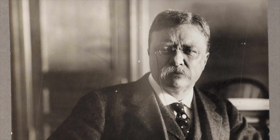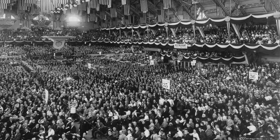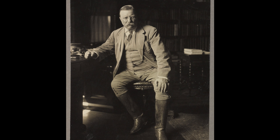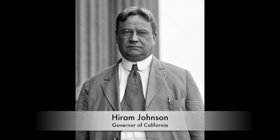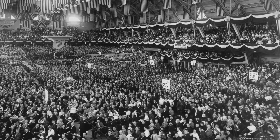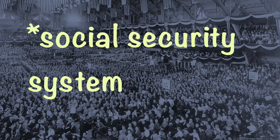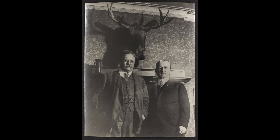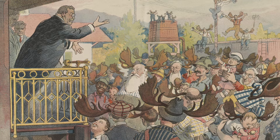Roosevelt and his supporters completely abandoned the Republicans, meeting up two weeks later to create their own political party called the Progressive Party. These progressives nominated Roosevelt for President and Hiram Johnson, the governor of California, as his running mate. At the convention, Roosevelt passionately promoted what he called a New Nationalism. Their platform sought a minimum wage for women, an 8-hour workday, a child labor law, a social security system, a national health service, and the direct election of US Senators, among other things. Afterward, Roosevelt told reporters he felt as strong as a bull moose, and the Progressive Party became popularly known as the Bull Moose Party.